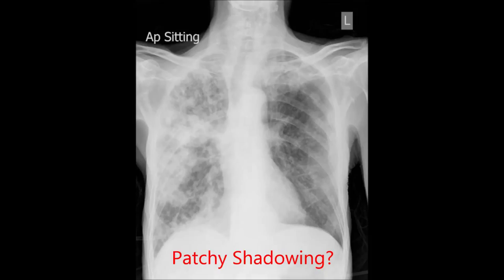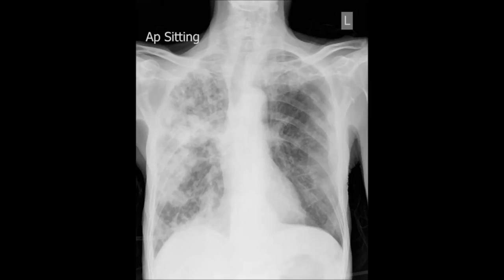For example, you could describe what you see here as patchy shadowing, widespread areas of increased density, multifocal opacification, or you might even get away with 'a load of white fuzz that probably shouldn't be here.' Look carefully from the top, at the apices, to the bottom, where the lung extends just below where you can see the diaphragm.